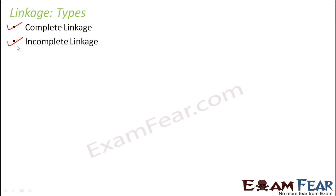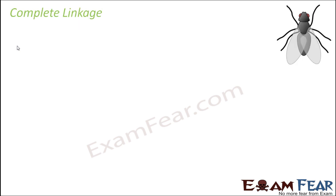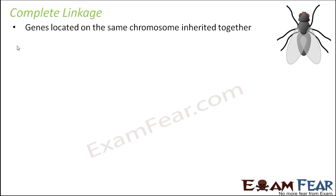Let us first talk about complete linkage. If the genes are located on the same chromosome and they are completely linked to each other, in that case they will always be inherited together, and if the genes get inherited together, the probability of crossing over decreases.